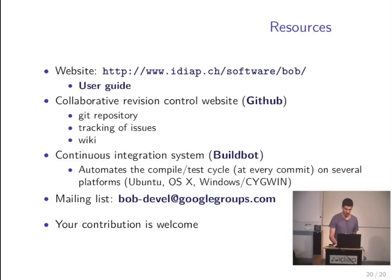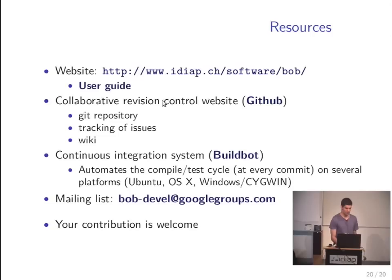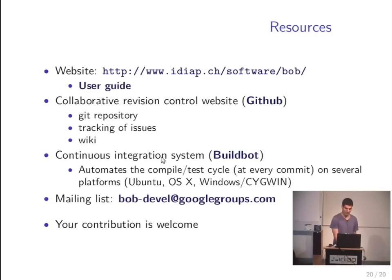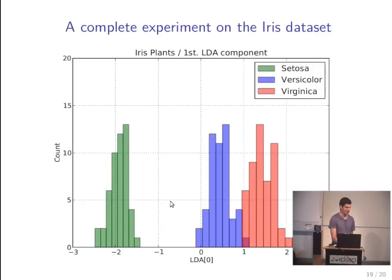That was it for my talk. At the end you can see some more resources: the website link, the user guide, and the library stored on GitHub which is a collaborative revision control website. We track bugs and everything on GitHub and use a continuous integration system to make sure the library still works properly after each code check-in. We also have a mailing list.